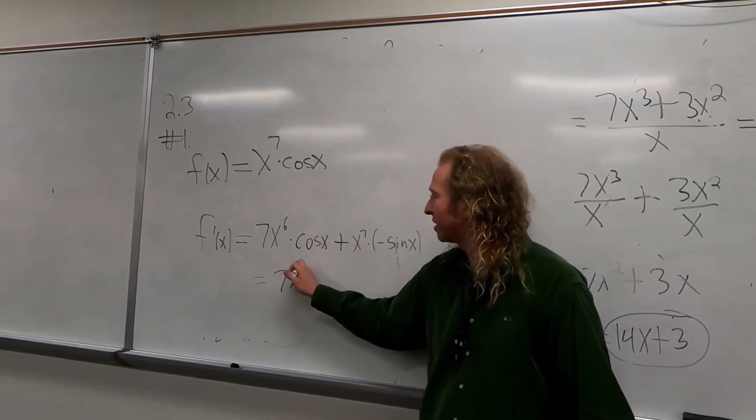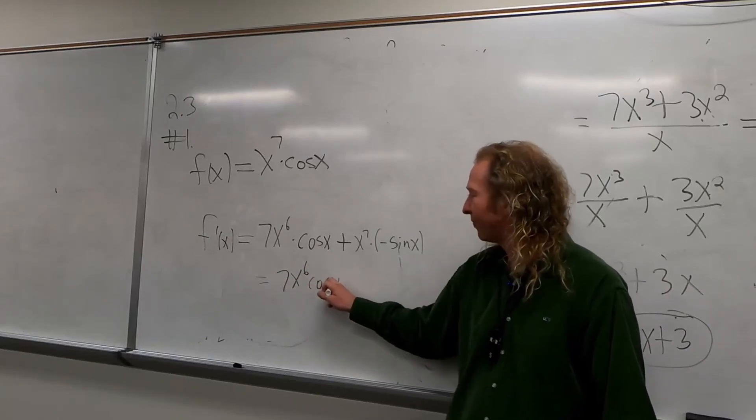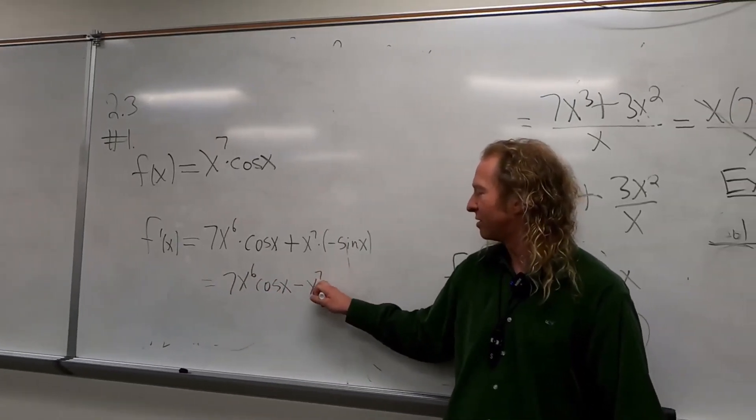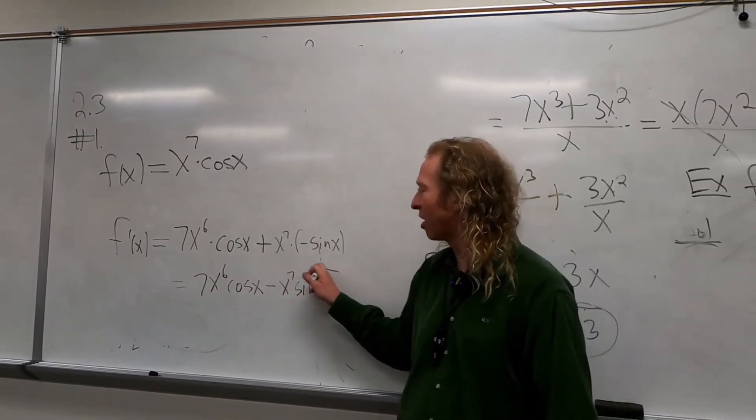So, it would be 7x to the sixth cosine x. What a great problem. Minus x to the seventh sine x. So, that's the product rule.